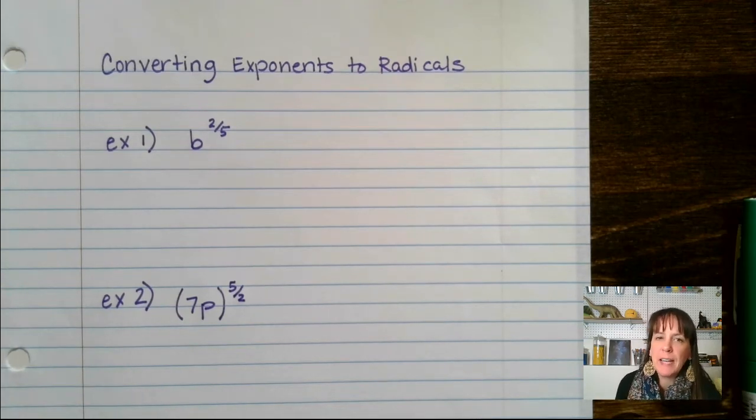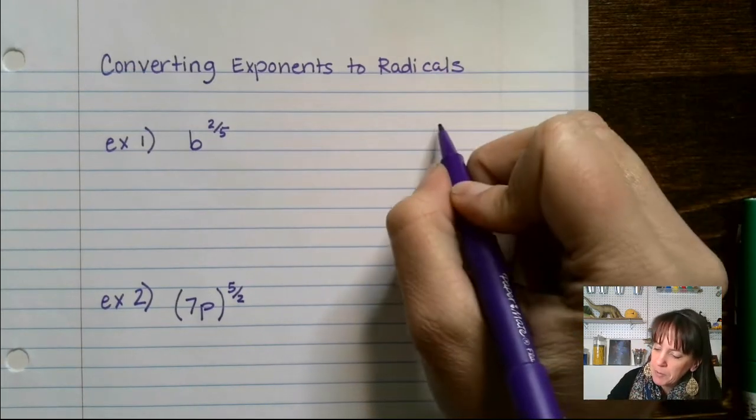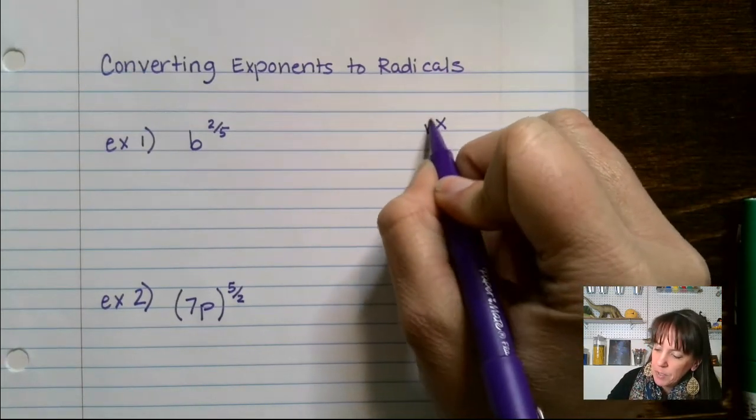Okay, we're going to be talking today about converting exponents into radicals. Let's talk about the most basic one, the square root. I'm going to throw an x here and I'm going to square root it.